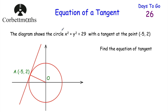Now let's have a look at a question for you to try. The diagram shows a circle x squared plus y squared equals 29 with a tangent at the point negative 5, 2. Find the equation of that tangent. Feel free to press pause now and have a go.